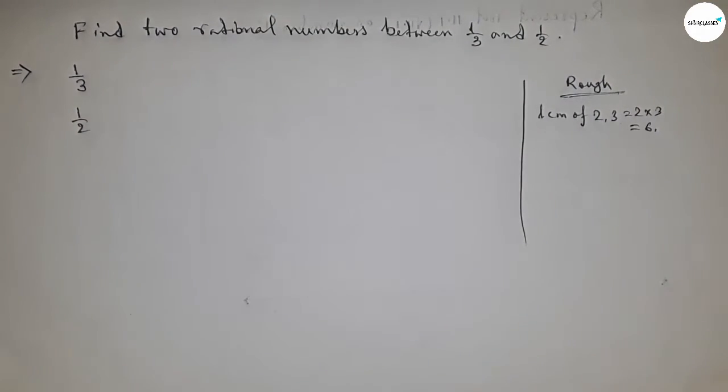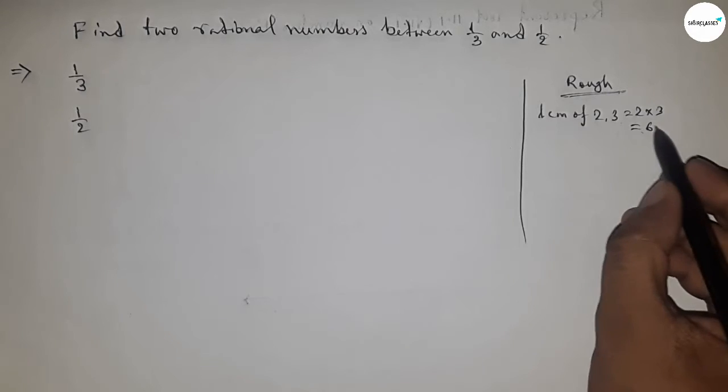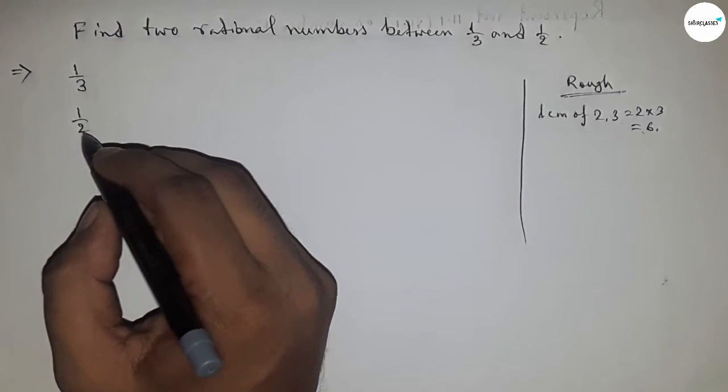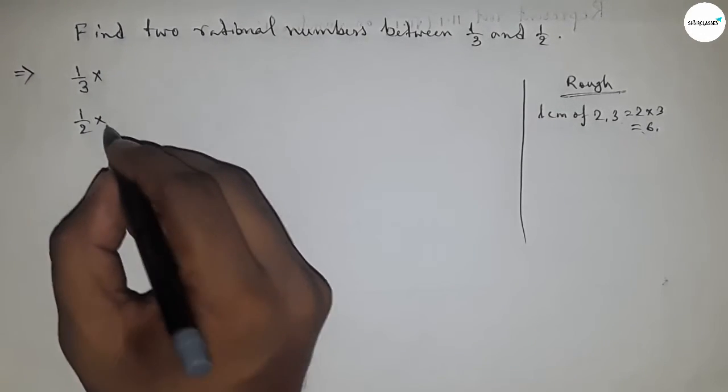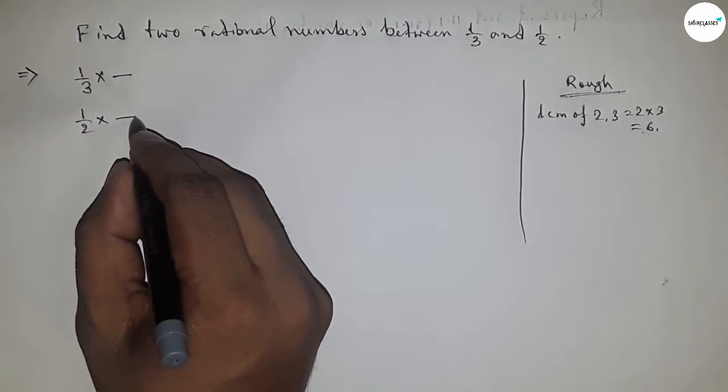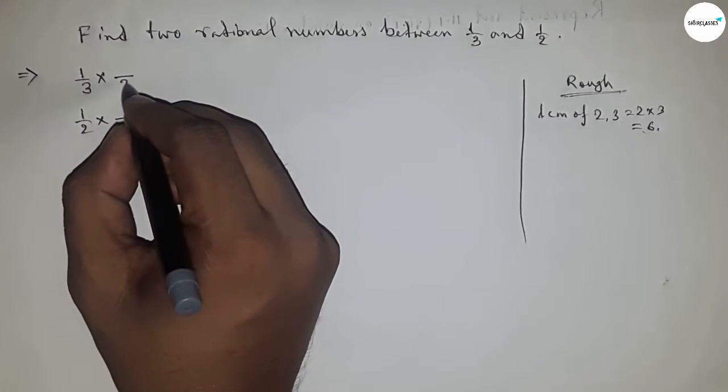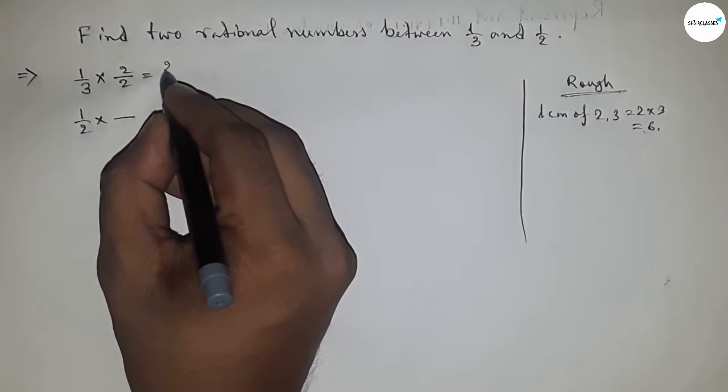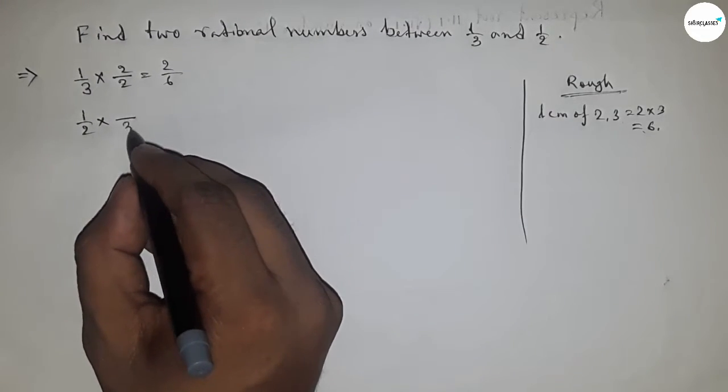And we have to make the denominator of both equal to 6. Okay, so what should be multiplying here and here to become the denominator 6? So if you here multiplying by 2, so this is 2 by 6, and